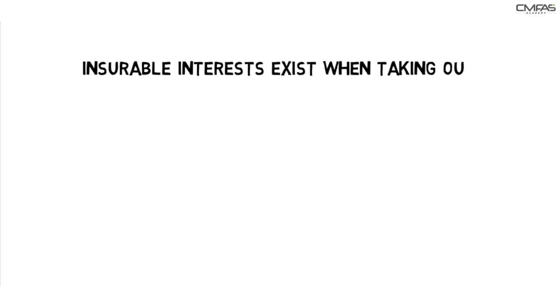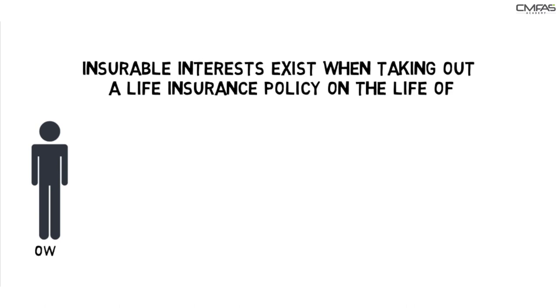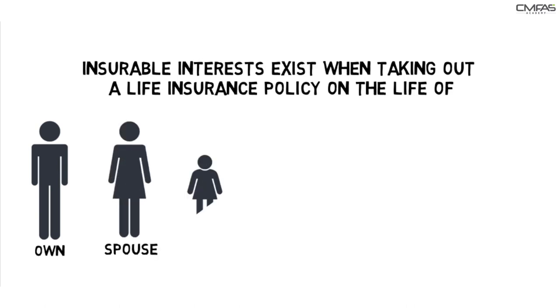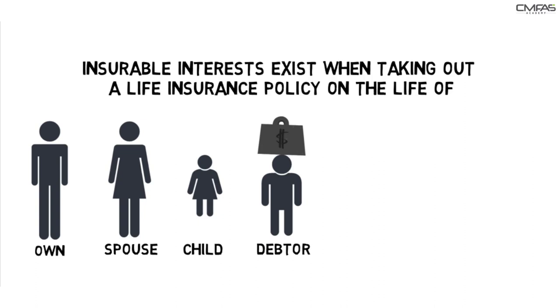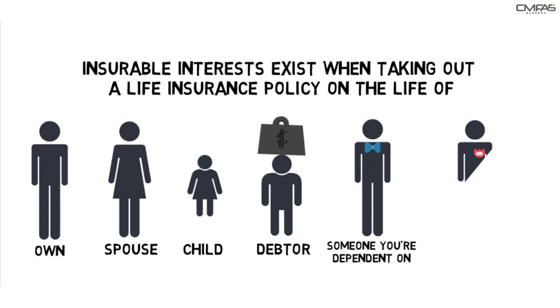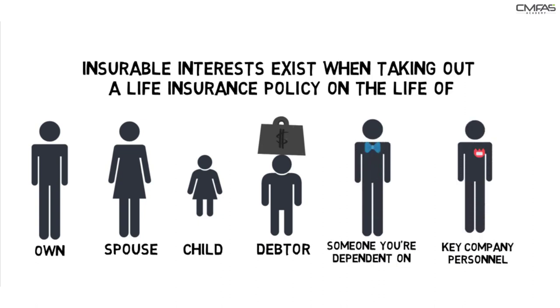Generally, insurable interests exist when taking out a life insurance policy on the life of your own, your spouse, your child, your debtor, someone whom you are dependent on, a key company personnel, or the settler or beneficiaries by the trustee.